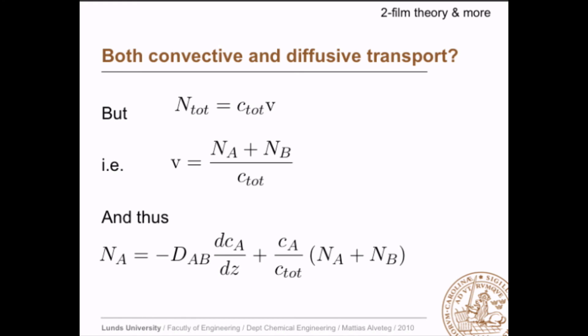We already said that mass transport equals concentration times velocity. In a two-component system, the concentration is the concentration of A plus concentration of B, and the mass transport is transport of A plus transport of B. So the average velocity can be written as the mass transport of B divided by the total concentration, and we can rewrite the equation using this convective term.